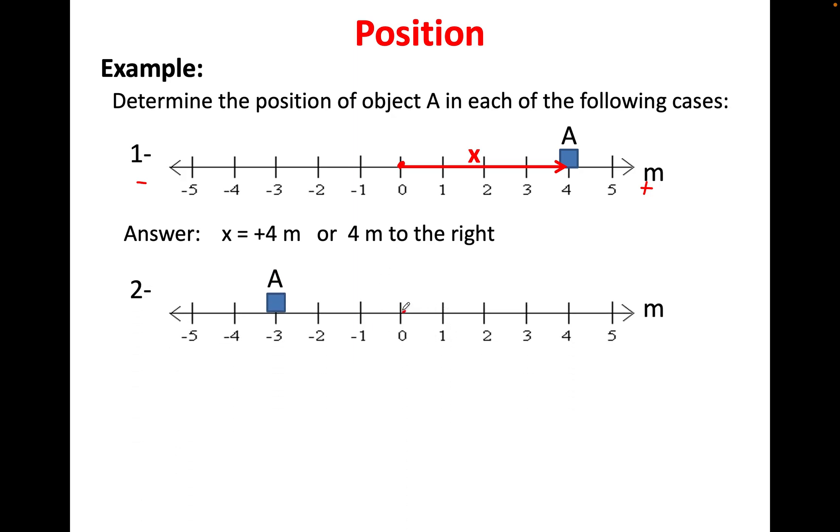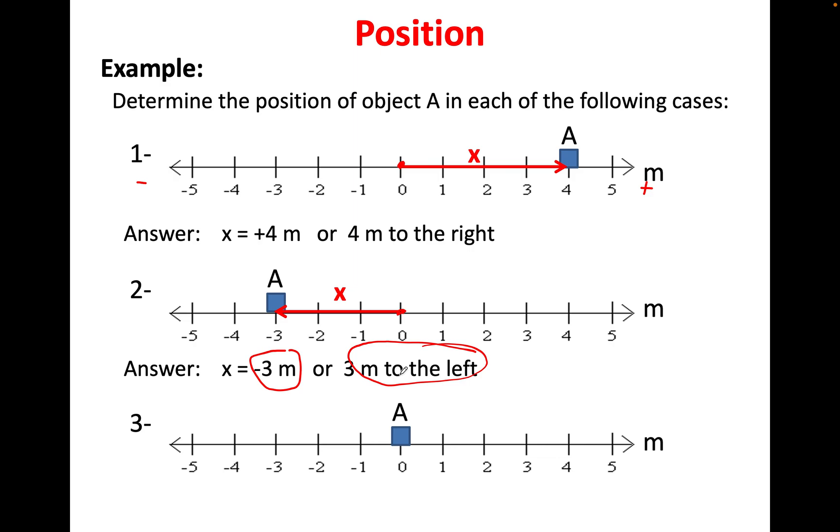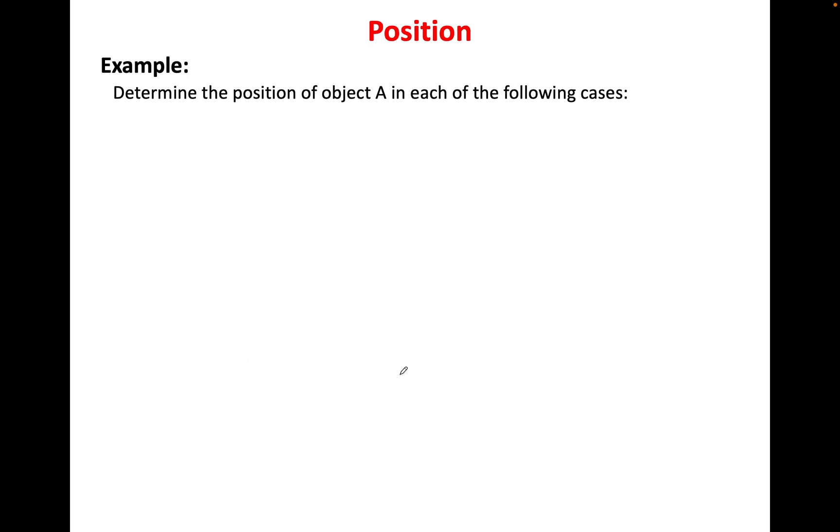Similarly, starting from 0, looking at this position here, we can say a is minus 3 meters, or 3 meters left. Do not say minus 3 meters left. That doesn't make sense. Either say this, or say this, this part here. Okay, final one. You look at a, you can see that he is on the 0 position. So, it's 0. Nothing else there.